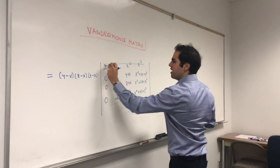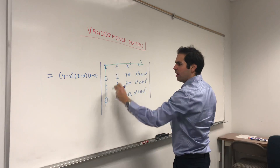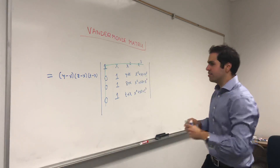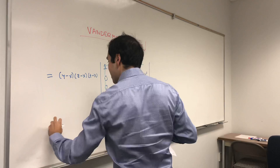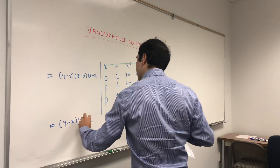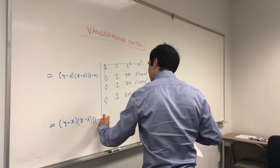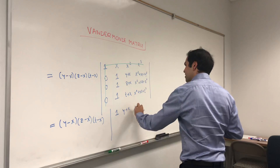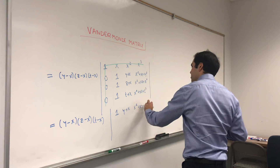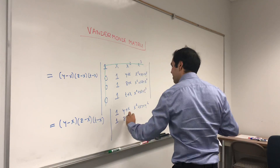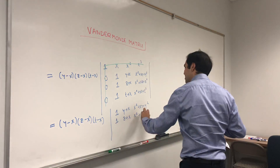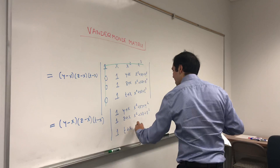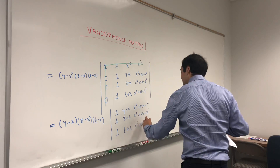If we expand along the first column, it's 1 times the determinant of the 3×3 submatrix plus 0, 0, 0. So we get (y−x)(z−x)(t−x) times the determinant of: row 1: (1, y+x, x²+xy+y²), row 2: (1, z+x, x²+xz+z²), row 3: (1, t+x, x²+xt+t²).